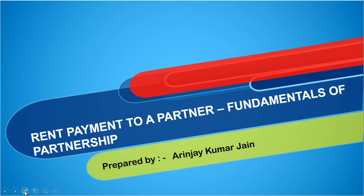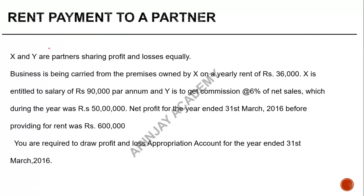Coming back to this particular case, X and Y are partners sharing profits and losses equally. Business is carried from premises owned by X at a yearly rent of 36,000. X is entitled to a salary of 90,000 per annum, and Y is to get a commission of 6% of net sales, which during the year were 50 lakh. Net profit for the year ended 31st March 2016 before providing for rent was 6 lakh. We are required to draw the profit and loss appropriation account for the year ended 31st March 2016.